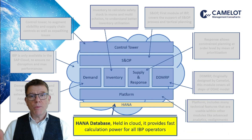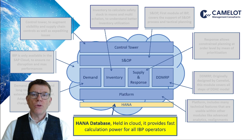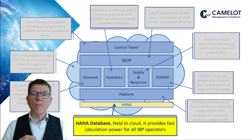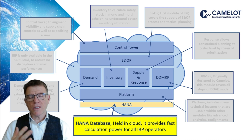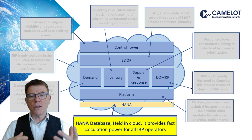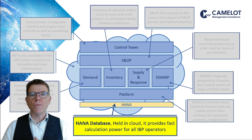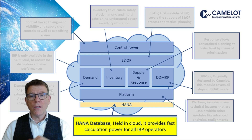SAP IBP runs with HANA. Utilizing HANA provides a high level of performance when calculating background jobs, like optimizer, heuristics, heuristics propagation, forecast, forecast consumptions, and any other operator running in IBP. So: in the cloud and with HANA.